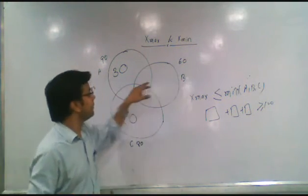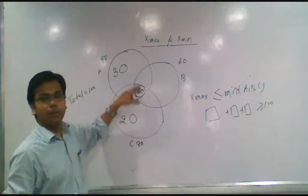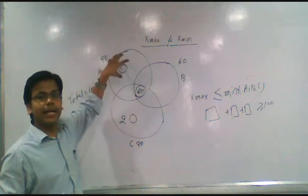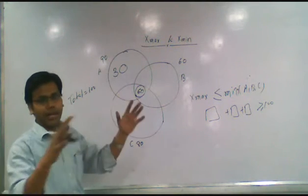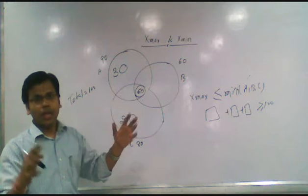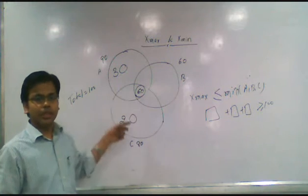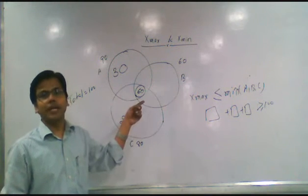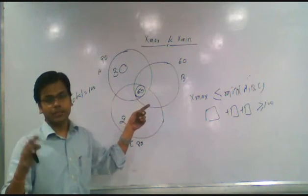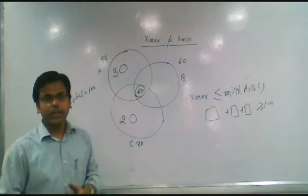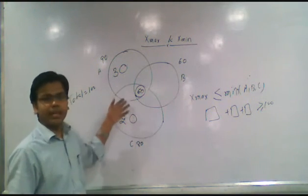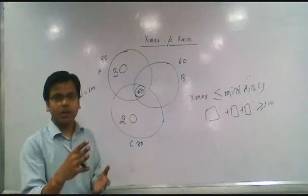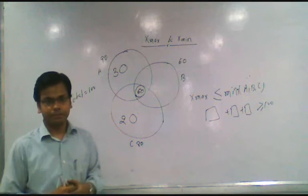First, plot the minimum value among the three sets in the all-intersection region. Then get the only-two values, assuming all-three values are 0. If the summation of these three parts is more than or equal to 100, that minimum value is your x maxima. Further adjustments will be covered separately, but this video focuses only on x maxima and x minima.